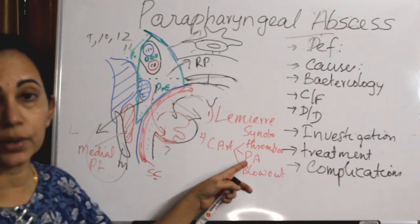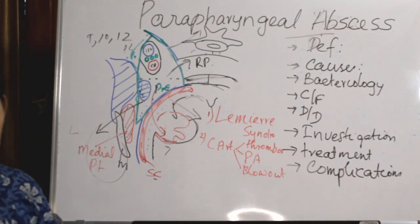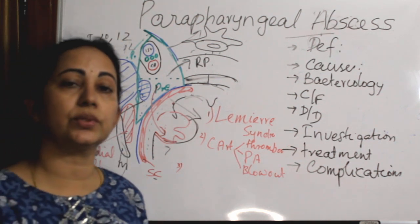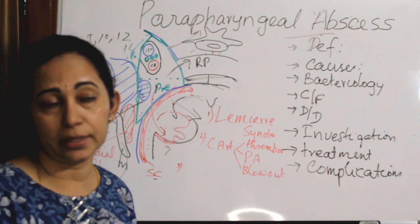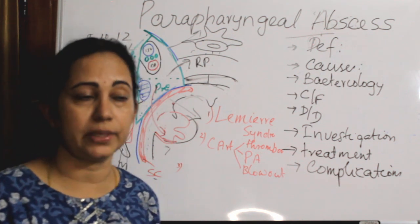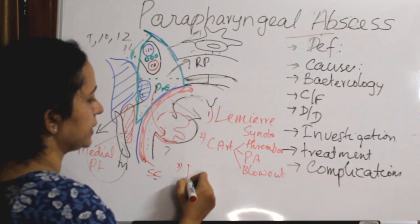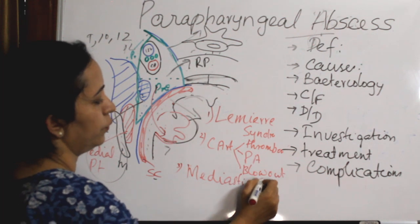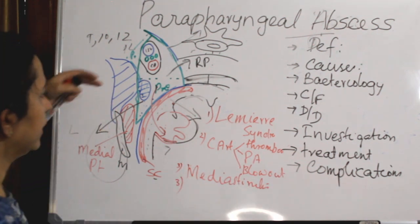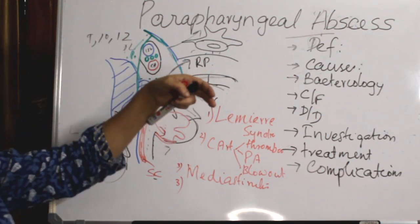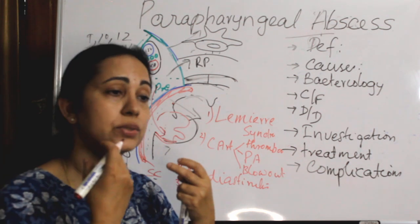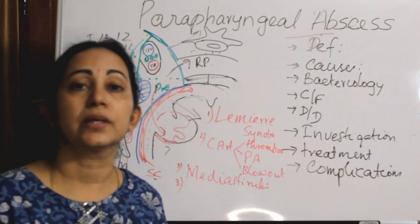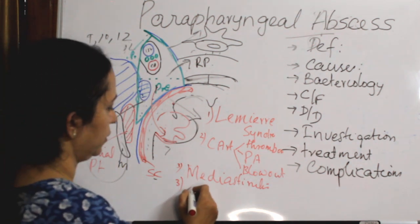The infection can spread through the carotid sheath — the so-called 'Lincoln's Highway' — leading to superior mediastinitis, which is also a very dangerous condition requiring immediate drainage. Medial bulging of the abscess into the oropharynx can cause airway compromise, requiring immediate tracheostomy followed by abscess drainage.